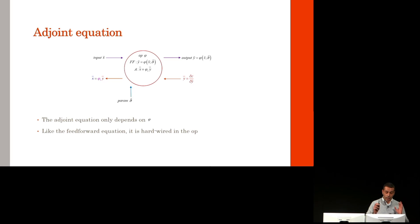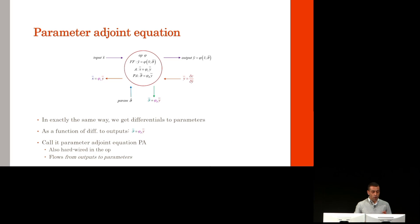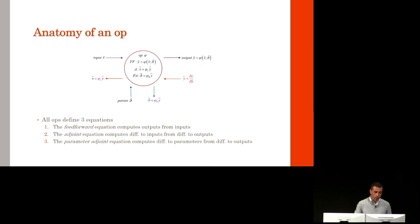Like the feedforward equation, it is hardwired in the op. But whereas the feedforward equation computes outputs from inputs and flows left to right, the adjoint equation computes the differential to inputs from the differential to outputs, and so it flows right to left. In the same way, you get the differentials to the parameters, theta bar. This is the same equation because in this picture, parameters and inputs are completely symmetric.